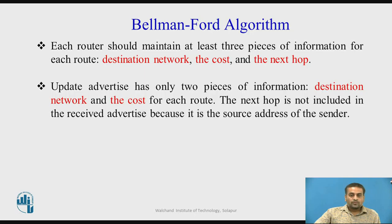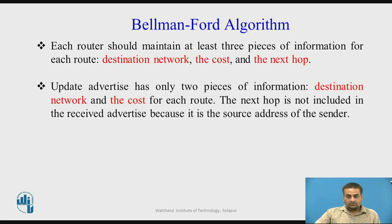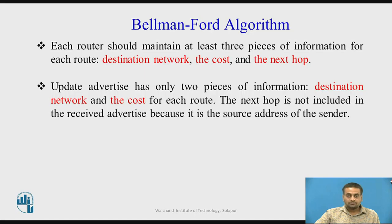Each router should maintain at least three pieces of information for each route entry: the destination network, the cost to that destination network, and the next hop to reach that destination network. When advertising to neighbors, only the destination network and the cost for each route are included.